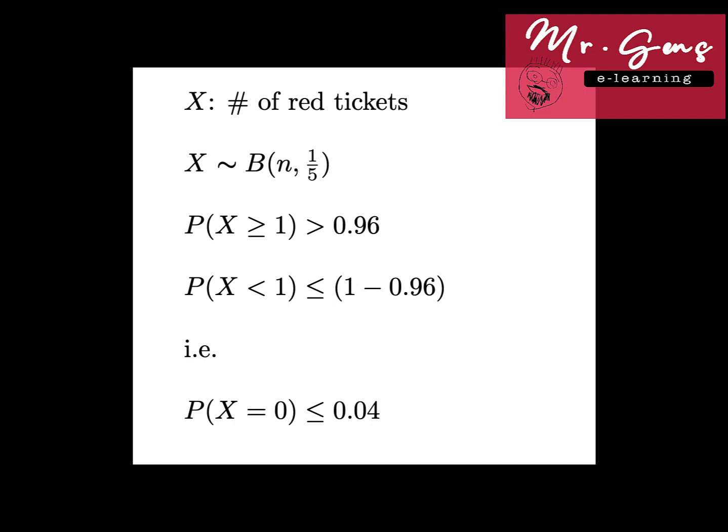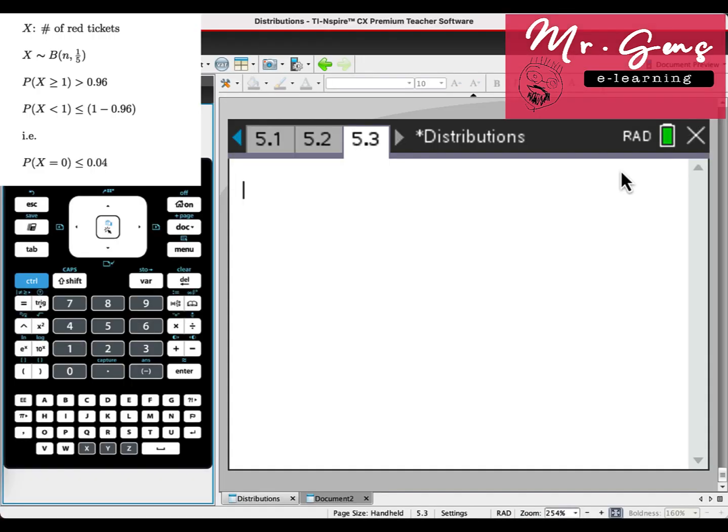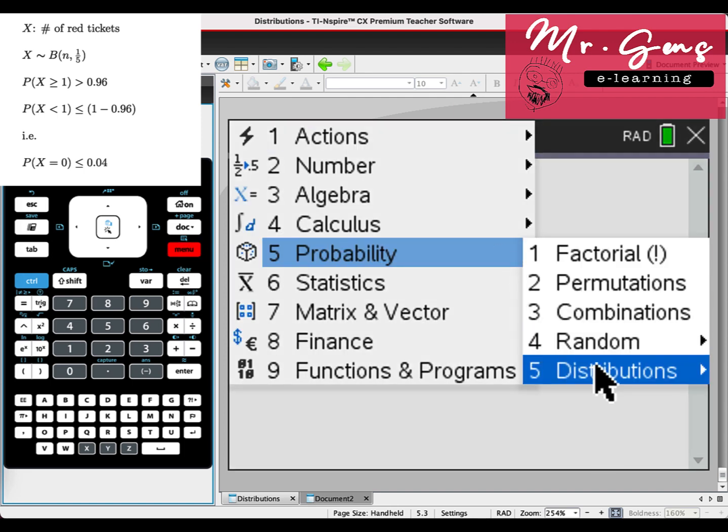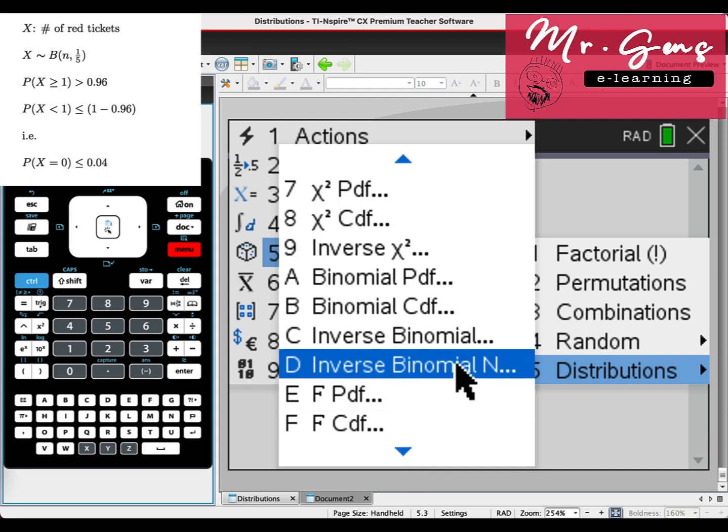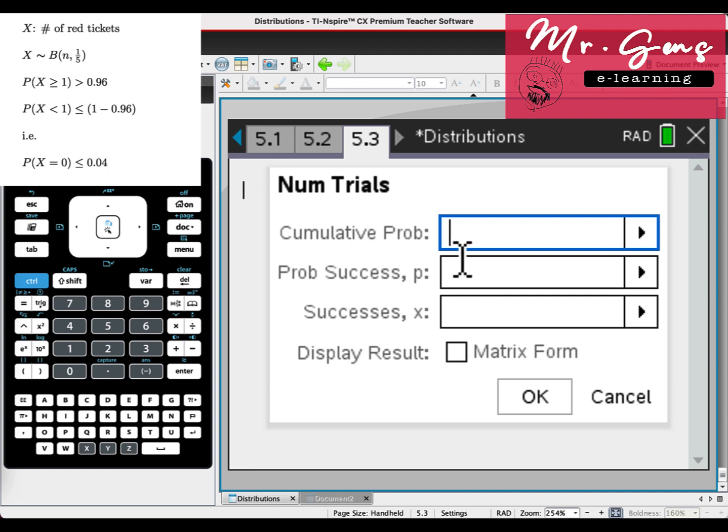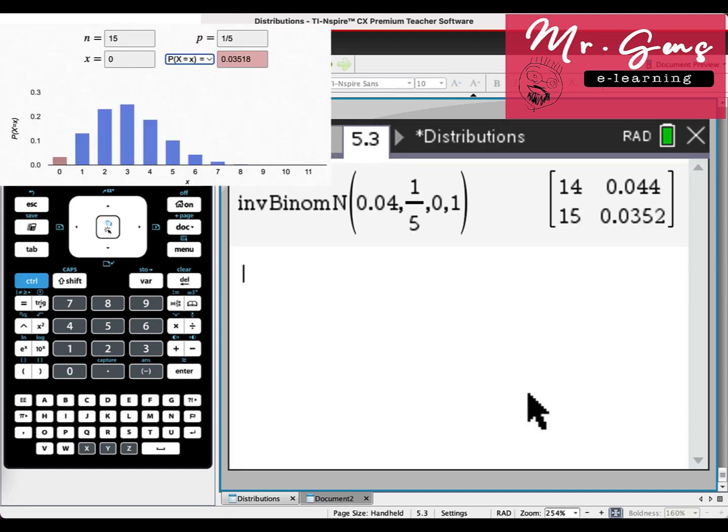We will use inverse binomial distribution option, but for this one we need the left area, so X must be less than or equal to a certain value. Go to calculator screen, press menu, probability distributions, and scroll down for option D, inverse binomial for n. Cumulative probability, as I said, it is the left area, 0.04. Probability of success is one-fifth, and X equals zero. Click on matrix form, then you will see both 14 and 15 and their corresponding probabilities. As you see, the values are the same.